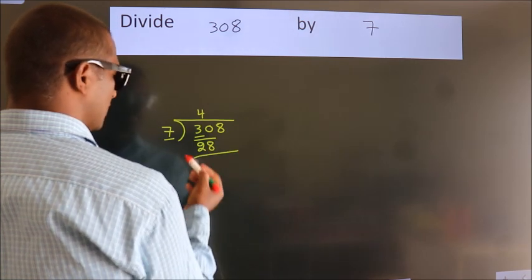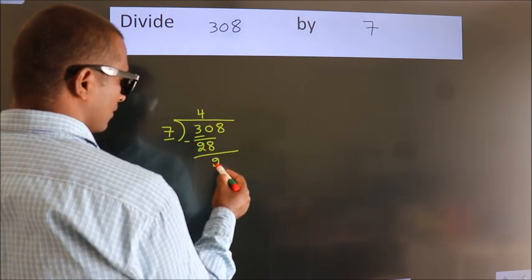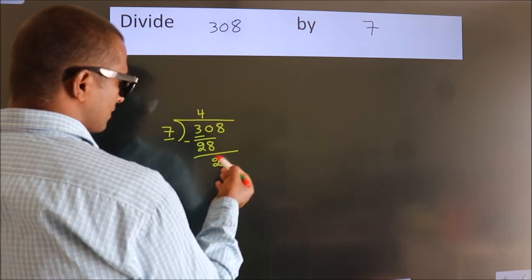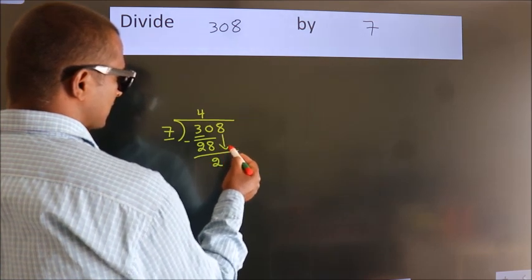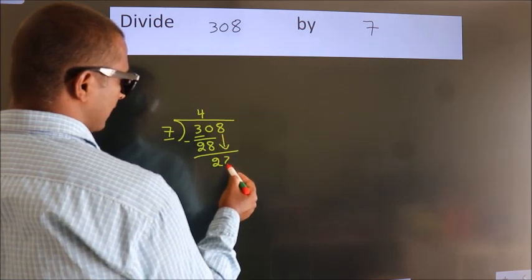Now, we should subtract. We get 2. After this, bring down the beside number. So, 8 down.